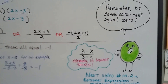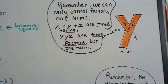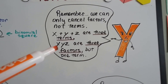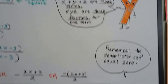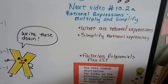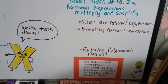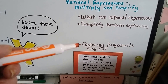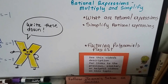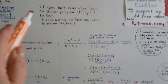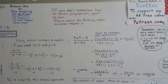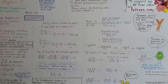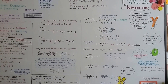Remember: the denominator can't be 0, and we can only cancel factors, not terms. When you see x plus y plus z, those are 3 terms. But x times y times z together — that's 3 factors in one term. Our next video, 10.2a, is going to cover multiplying and simplifying rational expressions. If you want to review rational expressions, simplification, or polynomial factoring, the entire playlist is in the description. If you don't remember how to factor polynomials, watch the factoring videos and review Chapter 6. See you next video.